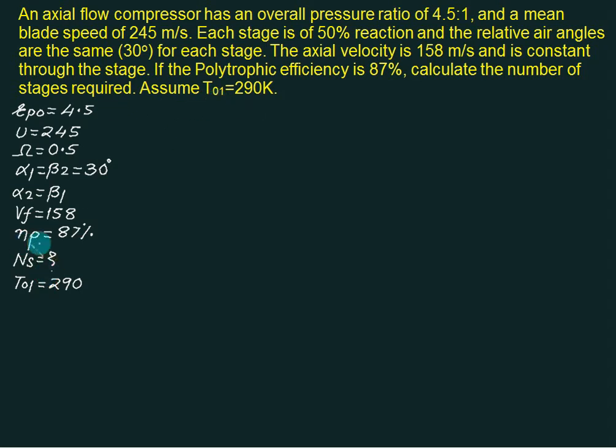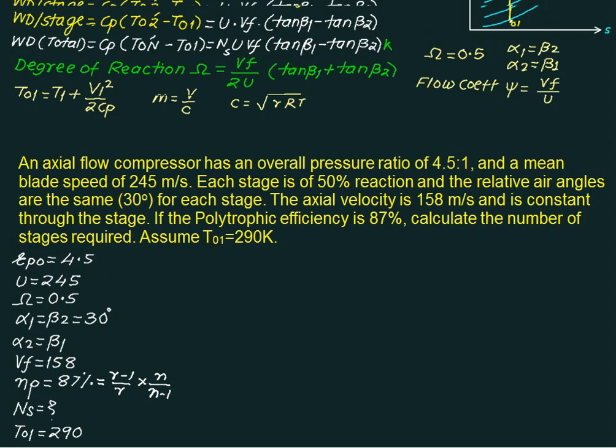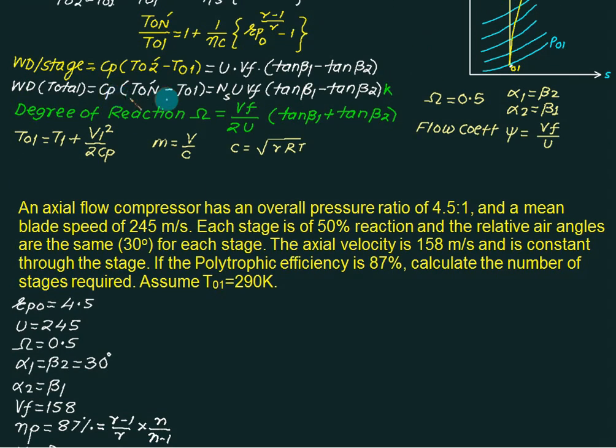Basically whenever you are given the polytropic process, it is defined as gamma minus 1 times n upon n minus 1. Using this we can find out the actual index for compression. We can directly calculate the value of T0n dash and then we will use this equation. We can get the value of T0n dash from the compressor equation.